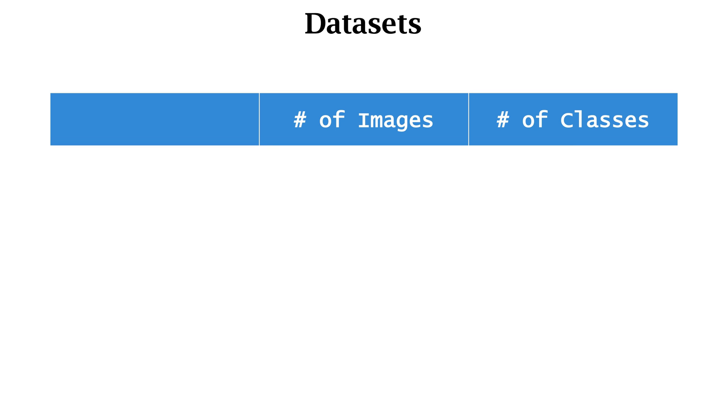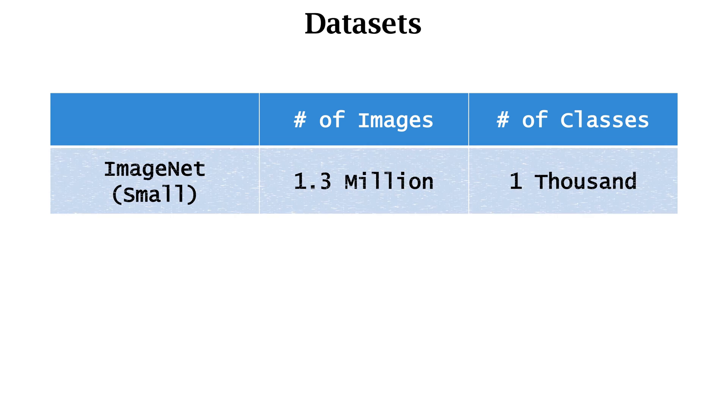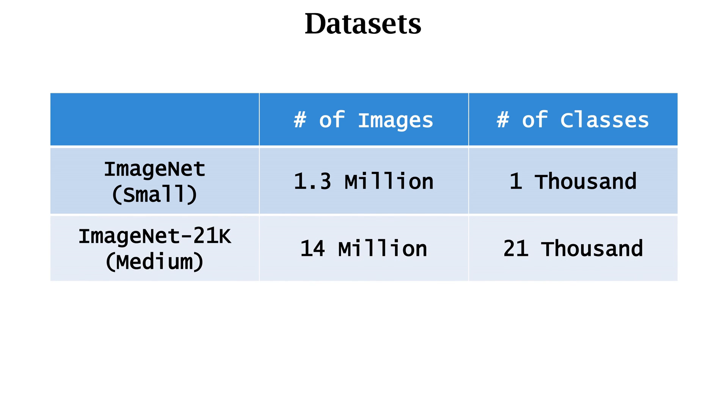The vision transformer paper mainly uses three datasets. The small ImageNet data is the smallest among the three datasets. It has 1.3 million images and 1,000 classes.